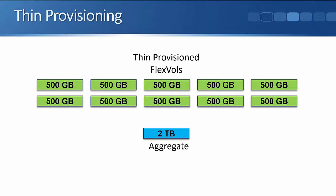This is where thin provisioning comes in, and we can get some great benefits here. Looking at exactly the same situation: rather than paying for five terabytes worth of physical space, I just create a two terabyte aggregate. In there, I'm going to have 10 logical volumes which are thin provisioned with a size of 500 gigabytes each. So as far as the clients are concerned, they've got that full 500 gigabytes, but I only pay for two terabytes.